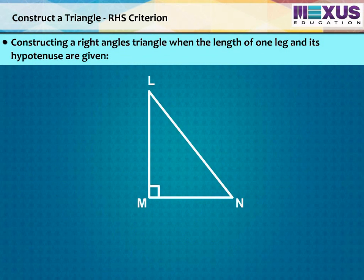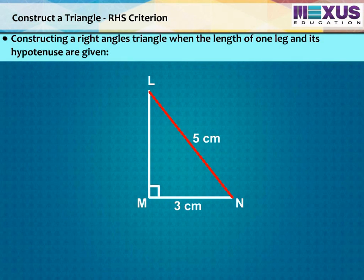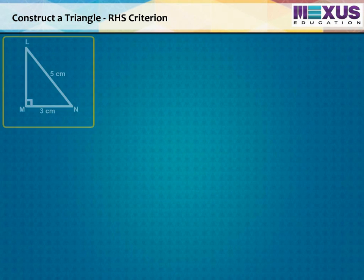To construct a right angle triangle LMN with one of its side as MN is equal to 3 cm and hypotenuse LN equal to 5 cm. First, draw its rough sketch. Start with one side.